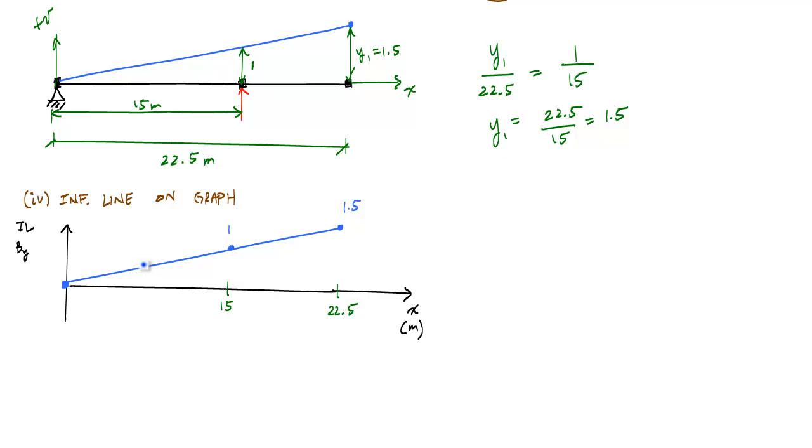If you calculated one more point, right at 7.5 meters, this value would be 0.5. So this is the influence line for the reaction at B with a concentrated unit load moving across.